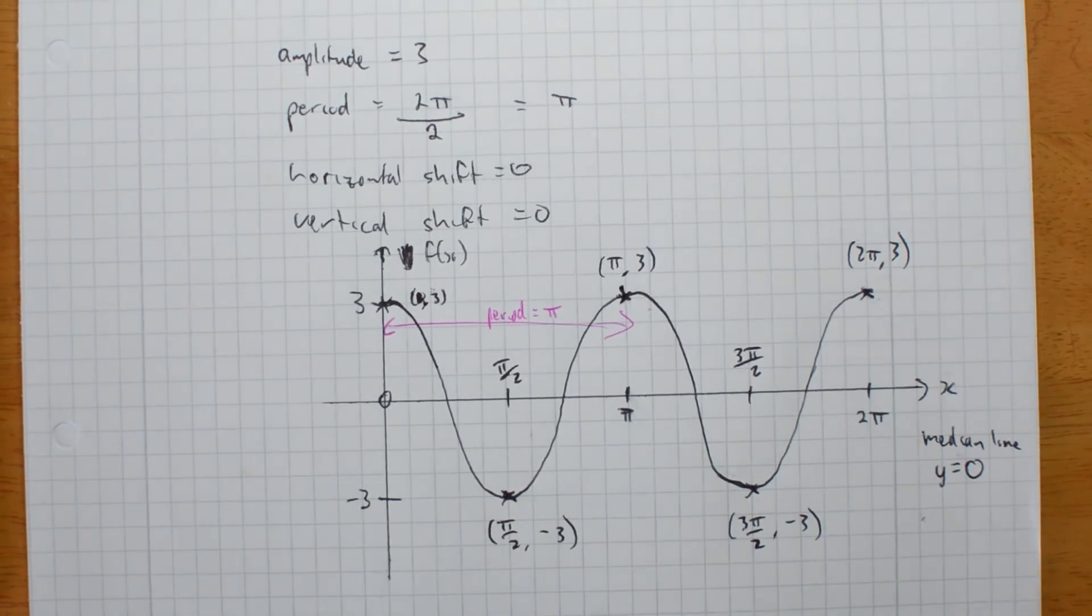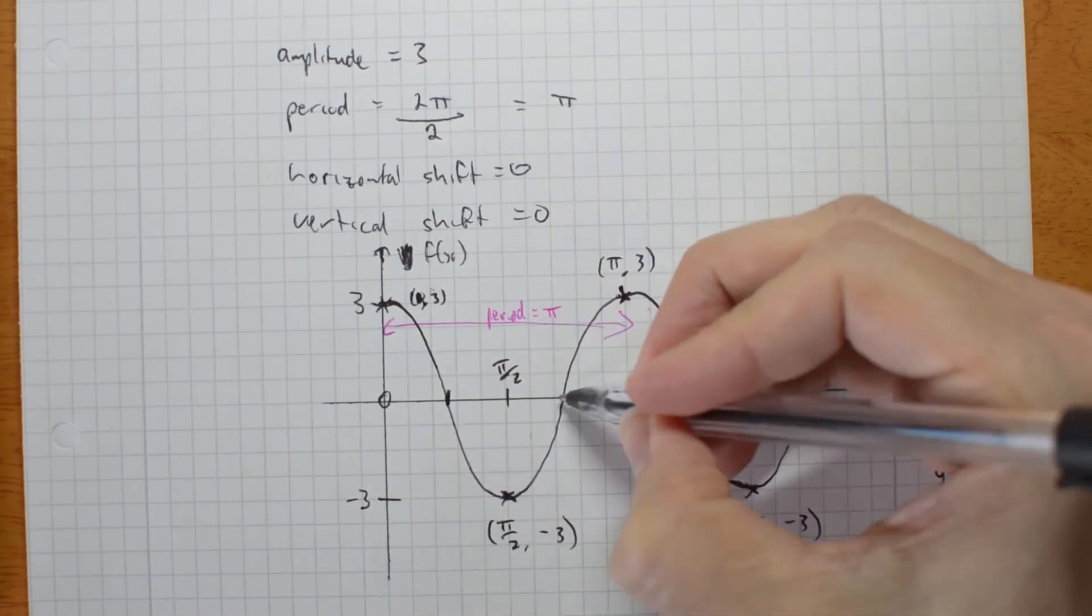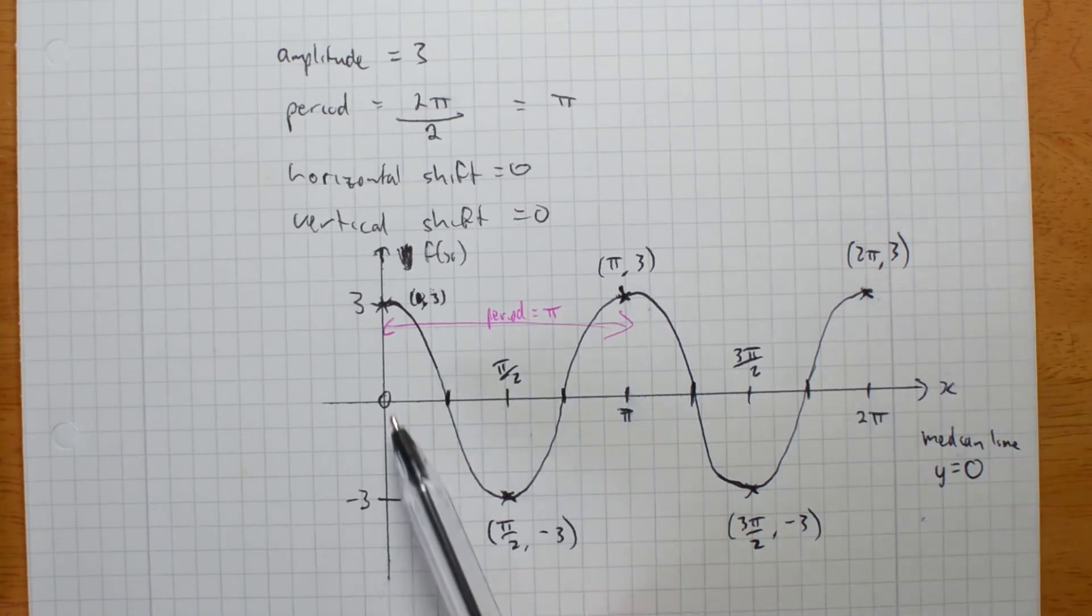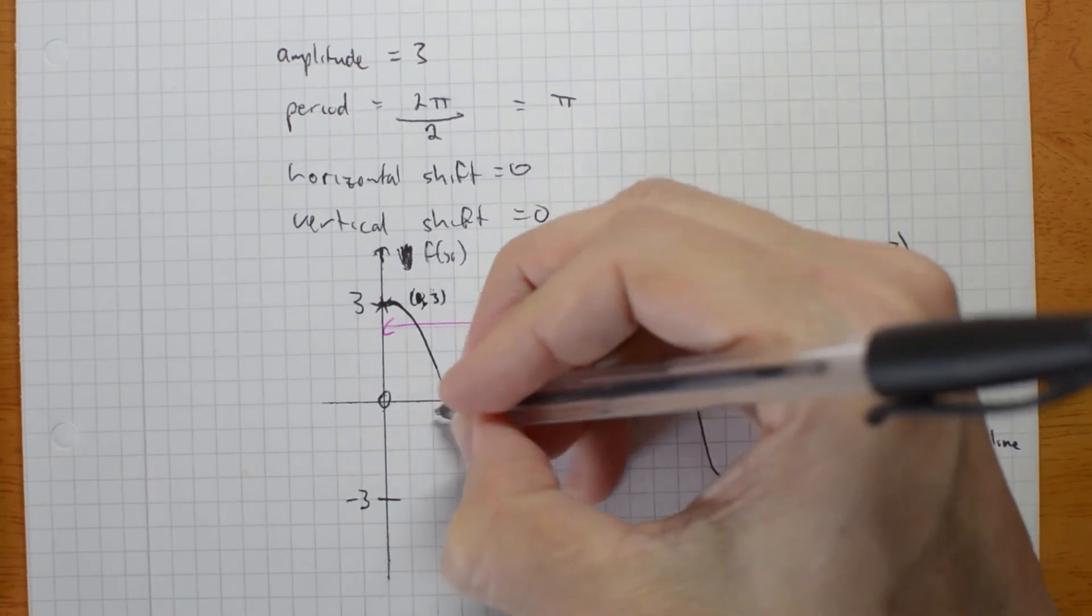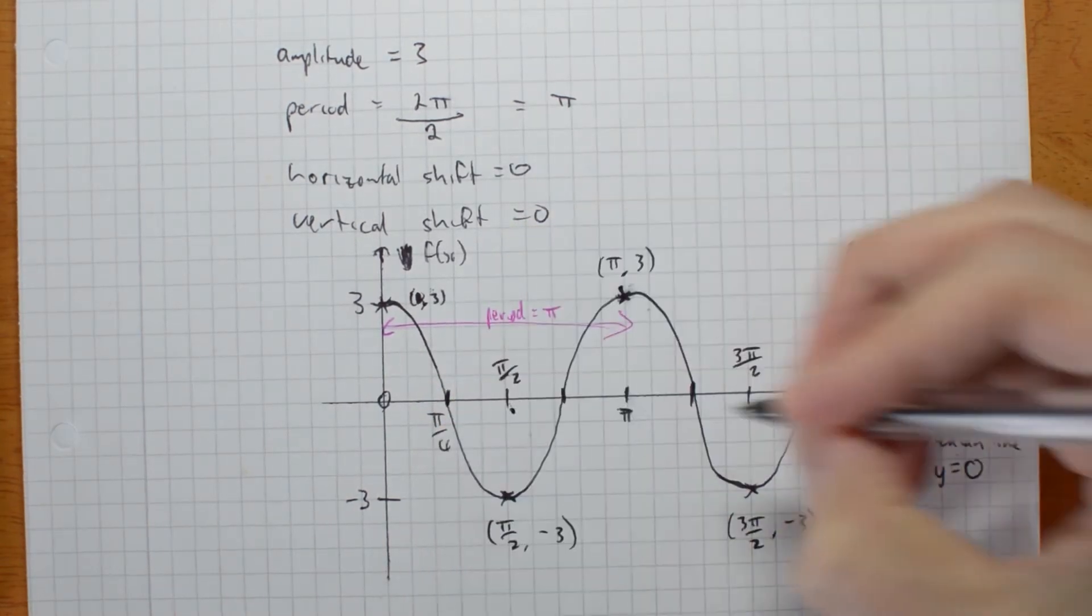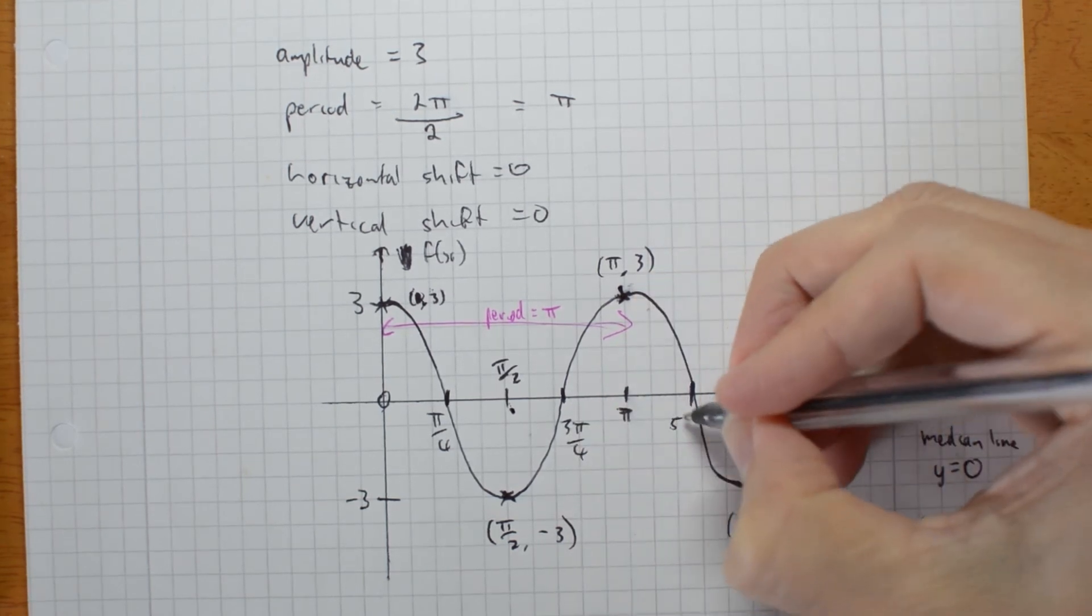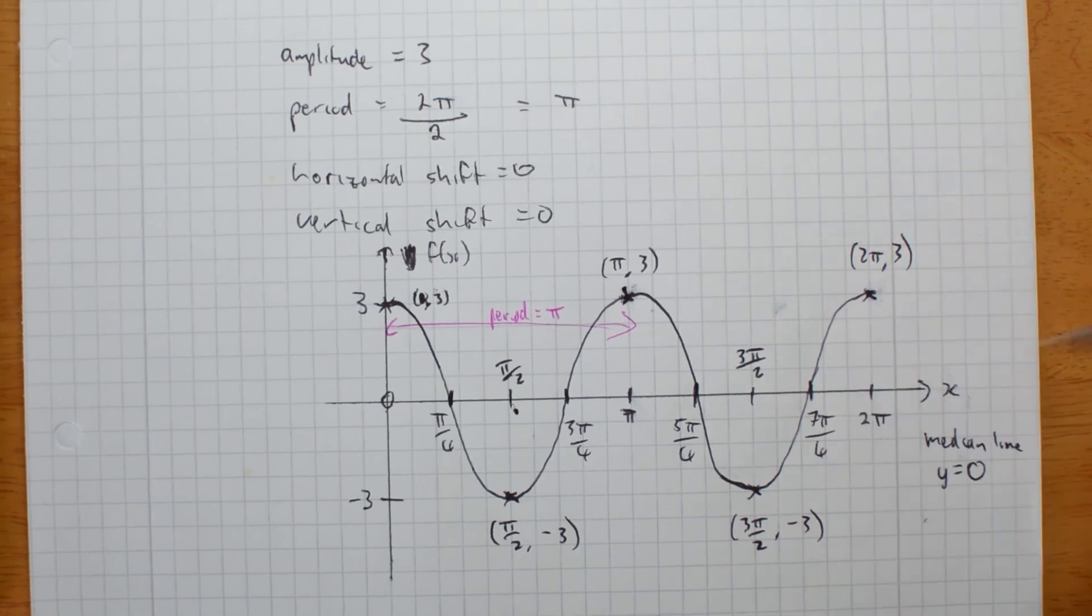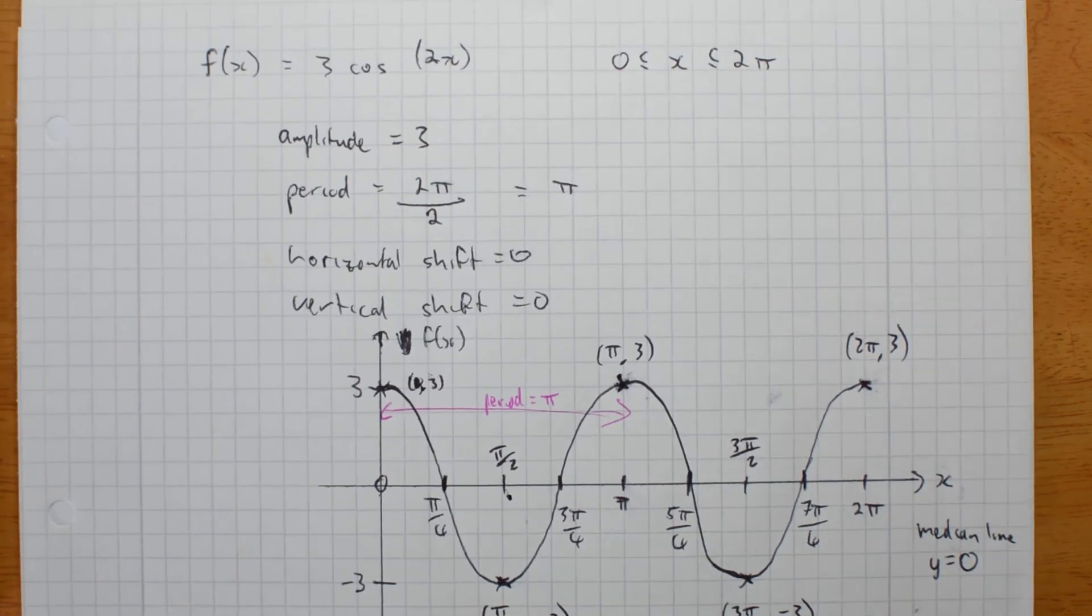And the last thing we really want to figure out is these points where it crosses the axis. Now, I haven't drawn them quite perfectly, but they are going to be halfway between 0 and pi on 2, pi on 2 and pi. So they're going to be at the quarters. So that point is pi on 4. This one is 3 pi on 4. This one is 5 pi on 4. And this one is 7 pi on 4. And there is my neat graph for this function.